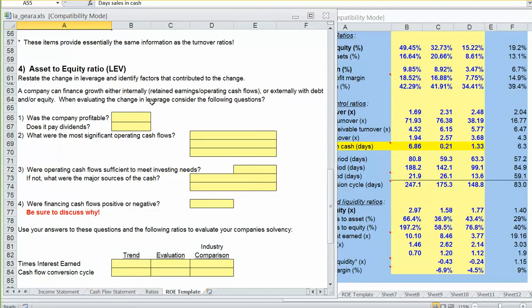A company can finance its growth internally through retained earnings or operating cash flows, or externally with debt and or equity. And when evaluating our change in leverage, we want to try to answer some of these questions. Don't just tell me financial leverage decreased because the asset to equity ratio went down. That's by definition. It's not explaining why the asset to equity ratio went down.